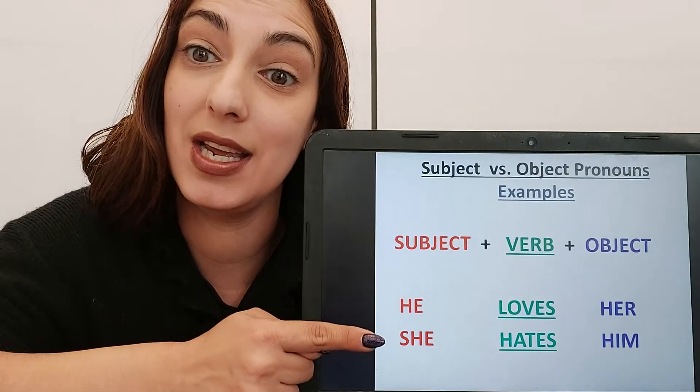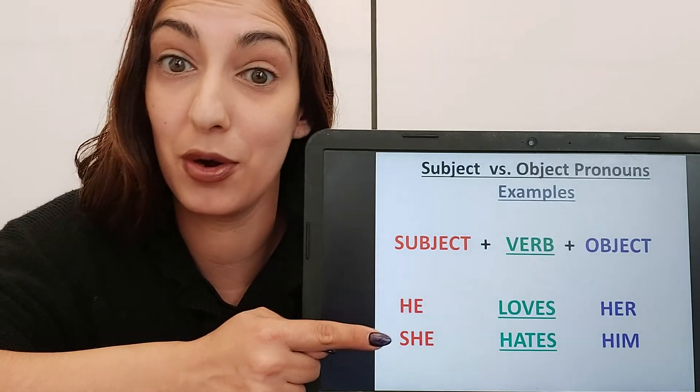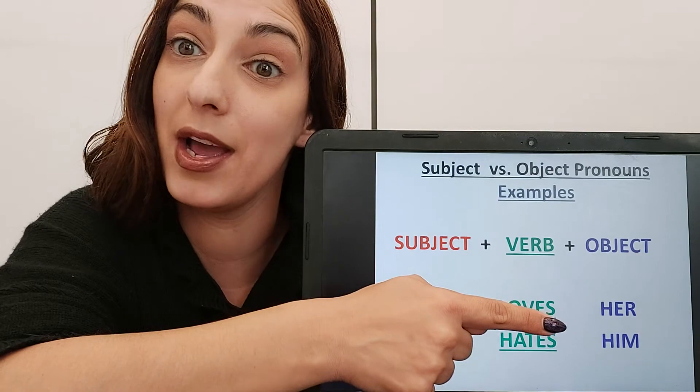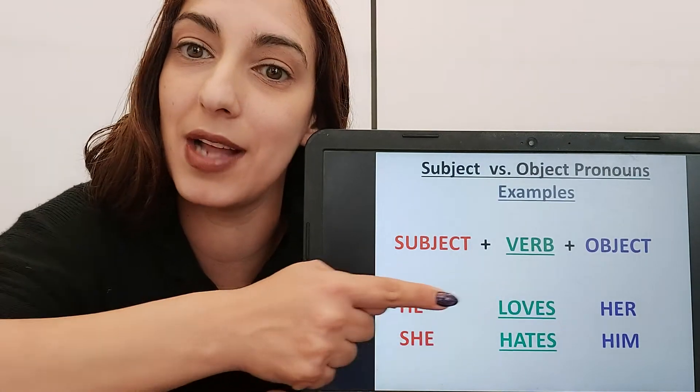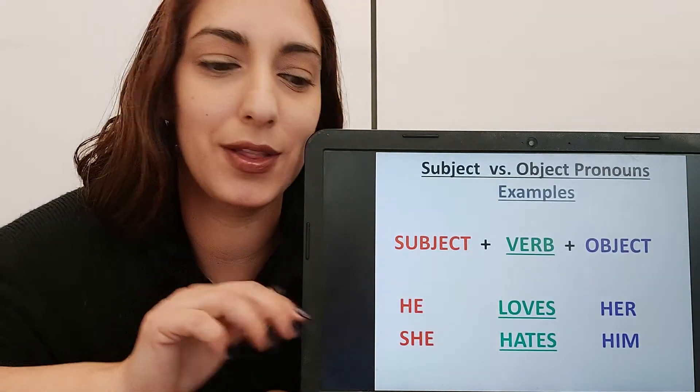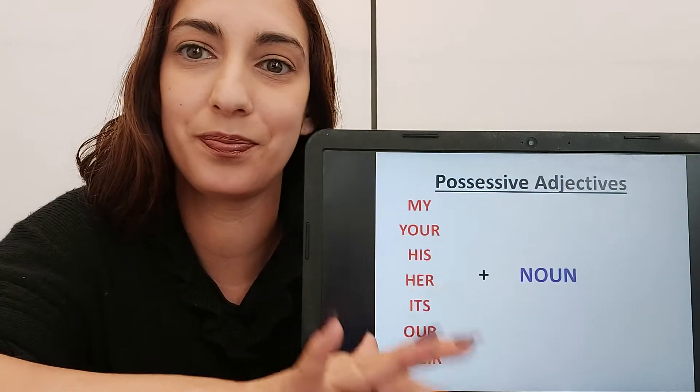She hates him. So, 'she' is my subject pronoun and 'him' is my object pronoun. And you see the position of the verb very clearly.